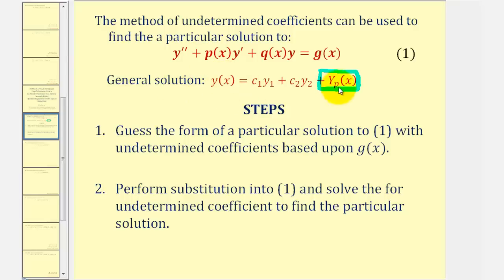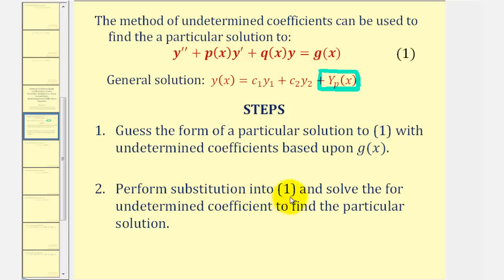To find our particular solution using the method of undetermined coefficients, we'll start by guessing the form of a particular solution with undetermined coefficients based upon our function g of x. Then with our guess and its derivatives, we'll perform substitution into the differential equation, and then solve for the undetermined coefficients to find the particular solution. So let's take a look at our example.